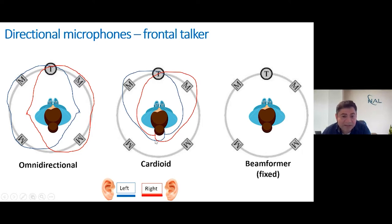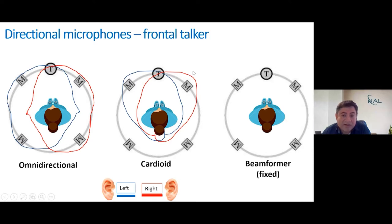The problem with the cardioid is that when the microphones are positioned to the left and right of the head, the head is in between and casts a shadow on the characteristic response of the microphone. As a consequence, the directionality gets tilted towards the right of the head. This is why in real listening conditions the directional sensitivity of a cardioid microphone positioned on the left appears not to be directed to the front but slightly to the right, and the same is true for the other side.